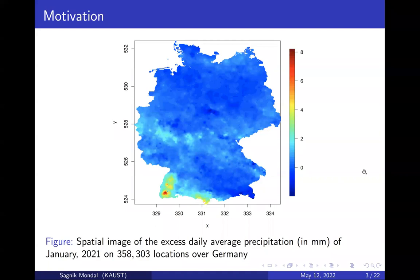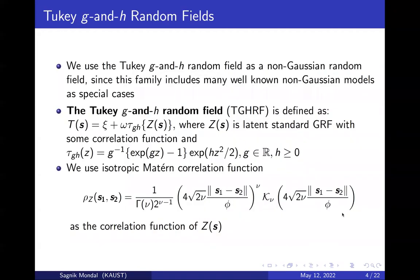Here is an example of spatial data where the Gaussian random field fails to model the data adequately. Notice that we have some extreme values in the southwestern region. In these types of data where we have extreme values, the Gaussian random field fails, and it is better to use a non-Gaussian random field. We use the 2KGH random field as it includes many well-known non-Gaussian random fields as special cases, along with the Gaussian random field.